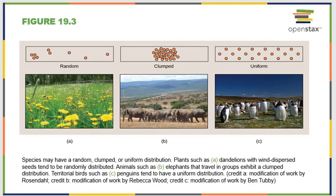Another thing we commonly look at is how populations are dispersed in their communities. Dispersion can be random, like weeds through a field. Certain populations are clumped, such as animals that move as a herd. Other populations are uniformly dispersed, where every individual has essentially the same range to build a nest, find food, or do whatever they need. All three of these situations tell us general characteristics about that animal and how it lives.